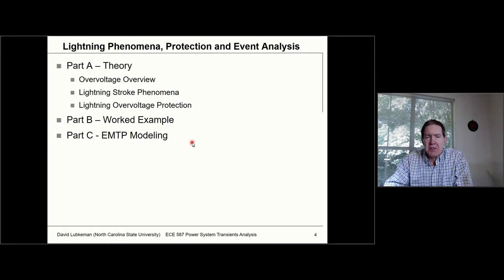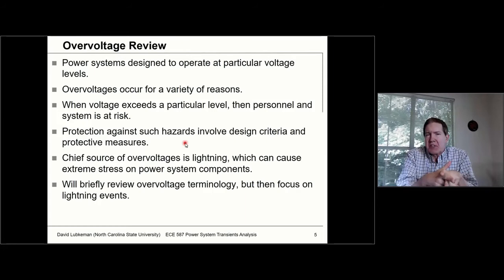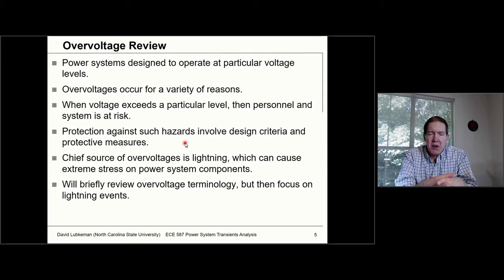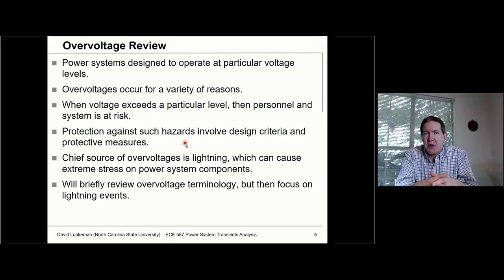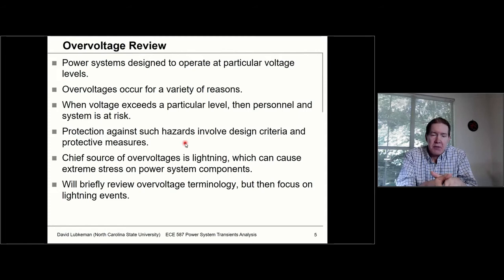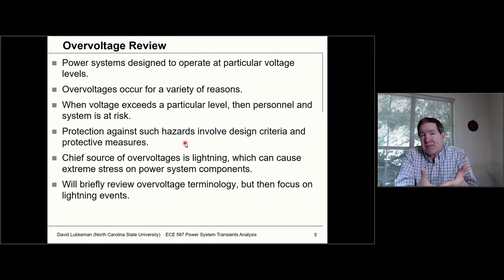Let's take a look at some of the theory behind lightning and how we can model it from a circuit analysis standpoint. We've been talking about different types of overvoltages — these occur for many reasons, and up to now we've been focusing more on overvoltages caused by switching operations. We're concerned about overvoltages because they put personnel and components at risk in terms of safety, component survival, and reliability. There are certain things we can do to mitigate the impact of these transients, which we'll discuss in the next lecture when we talk about surge arresters.